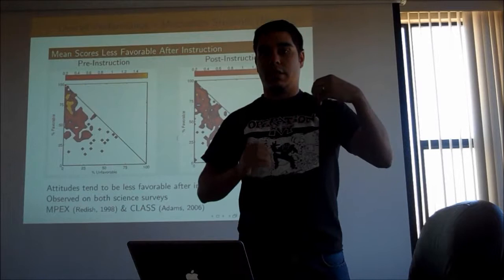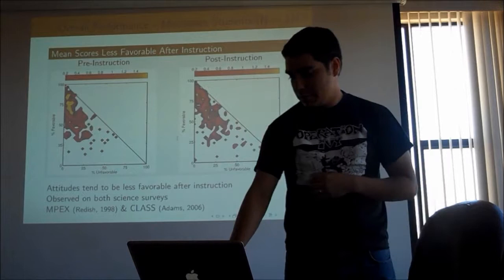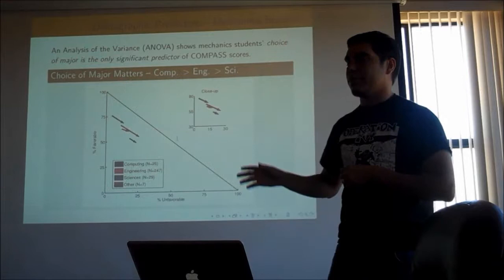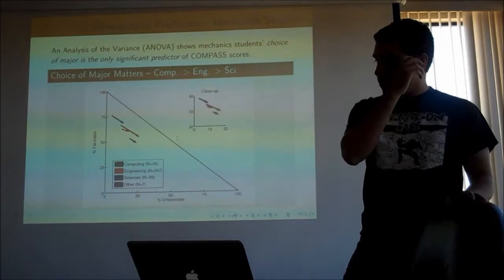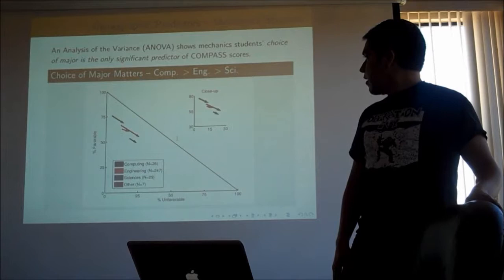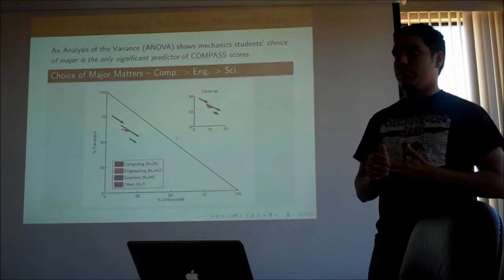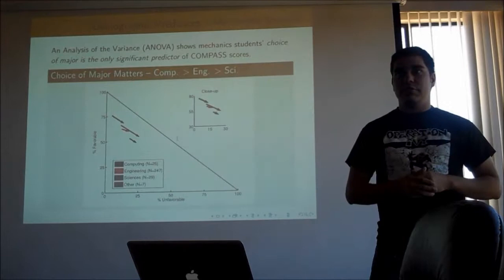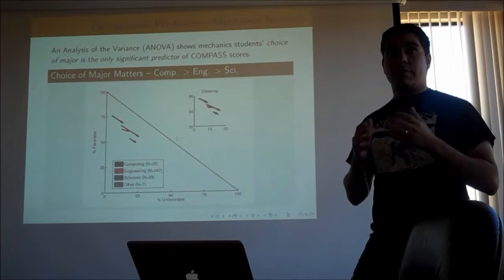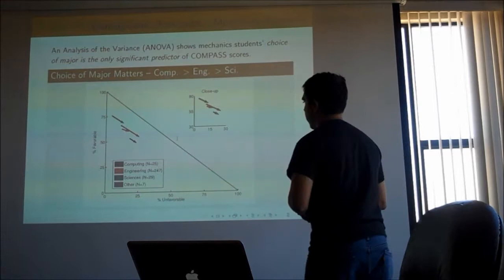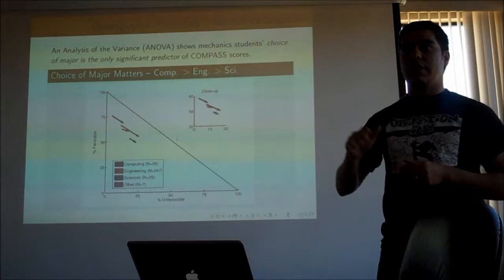We can look at many different features. Looking at analysis of variance, the major predictor is what college students are in. We have six colleges at Georgia Tech. Computing students — CS and computer information — have the most highly favorable scores, as you'd expect. Engineering students are a little lower. Students in the sciences, which here are all biology, biochem, and chemistry students (physics students take a separate honors course), have the largest negative shift. Classification and GPA don't seem to matter significantly.